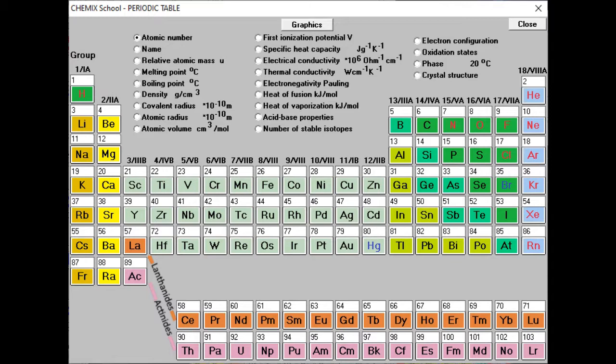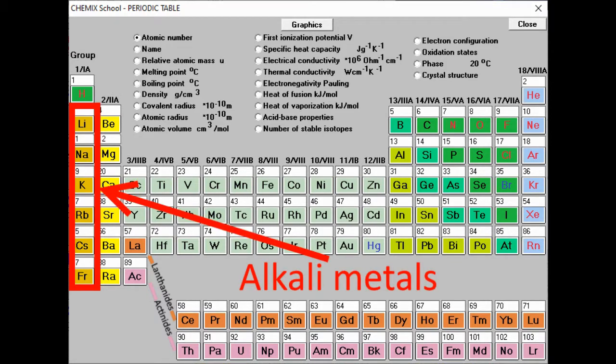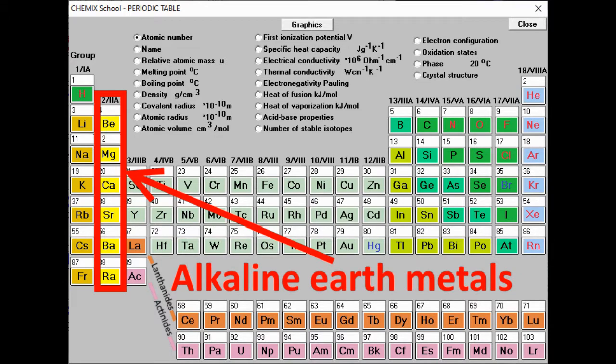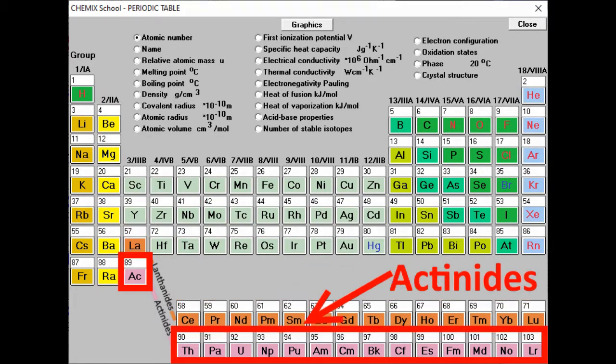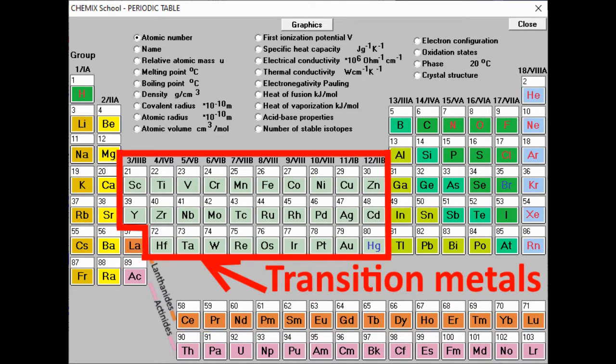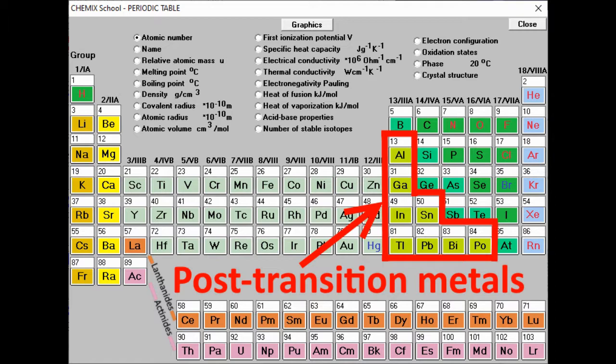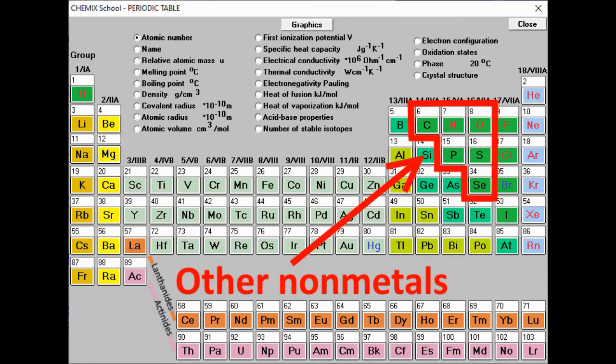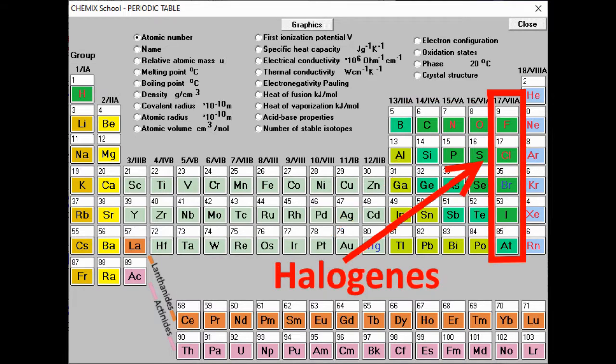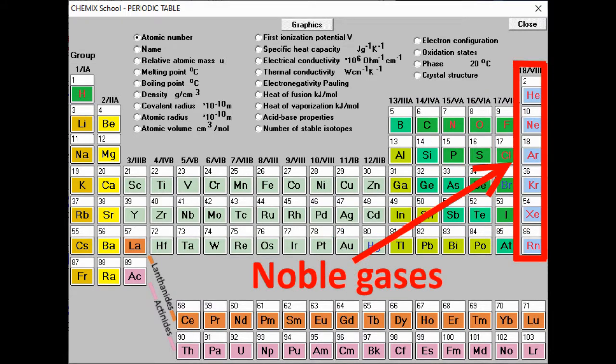We group the elements the following way: alkali metals, alkaline earth metals, lanthanides, actinides, transition metals, post-transition metals, metalloids, other non-metals, halogens, and noble gases.